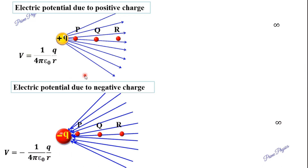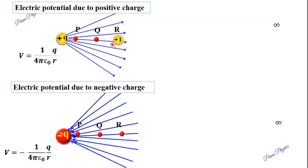Here is a positive source charge. Let's go to points P, Q, and R. At point R, the electric potential, as per the definition, is the work done to move the unit positive charge from infinity to that point with constant velocity.